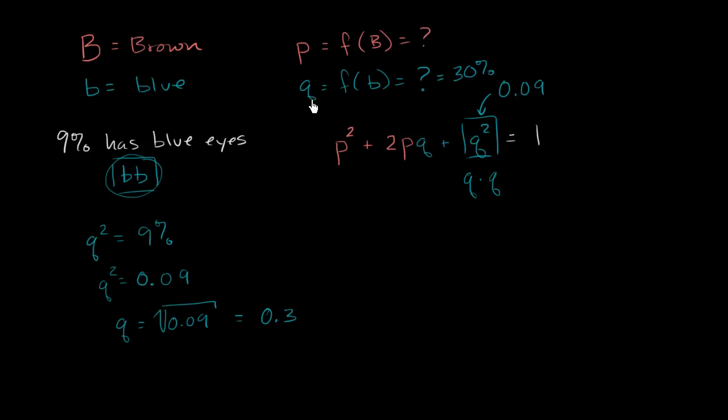And based on that, we can figure out what percentage code for the dominant variant. The rest of the genes must code for the dominant one, because we're assuming there's only two of them. P plus Q equals 100%, or P plus Q equals 1. So this must be 70%. We can dig a little bit deeper here. What is P squared? P squared is going to be 70% squared, or 0.7 squared, which is 0.49.